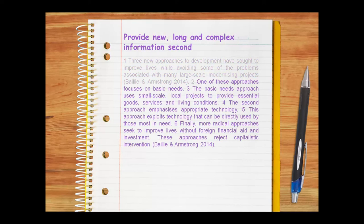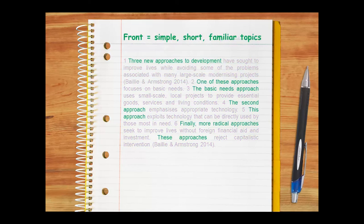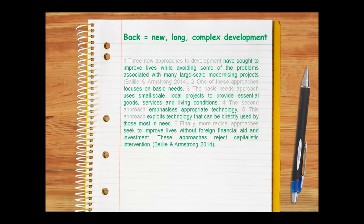Sentence structure also contributes to cohesion. Like the paragraph as a whole, the front of each sentence begins with simple, short, familiar topics, and the back of each sentence develops these topics with new, long, complex ideas. Just as paragraph structure and sentence structure aid cohesion, so too do sentence links. These include front-to-front and back-to-front links, as well as explicit cohesive markers.